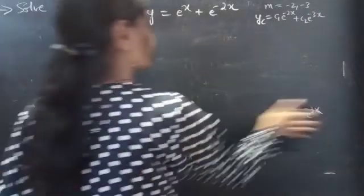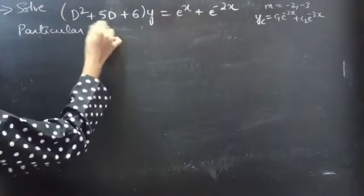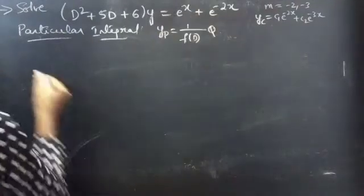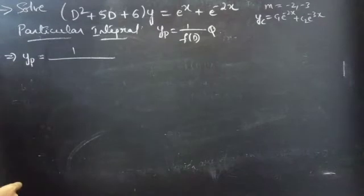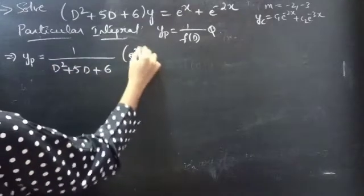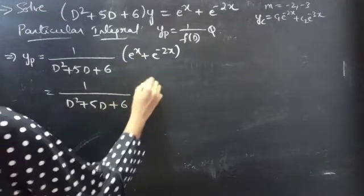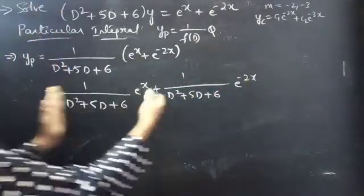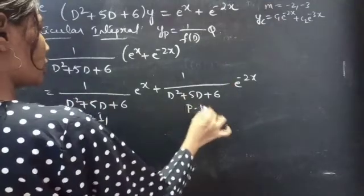Now let's find the particular integral. y_p = (1/f(D))·Q, where Q = e^x + e^(−2x) and f(D) = D² + 5D + 6. We can find each term separately: let particular integral 1 (PI₁) correspond to e^x and particular integral 2 (PI₂) correspond to e^(−2x).